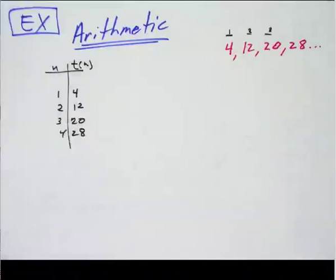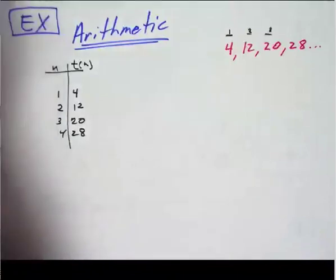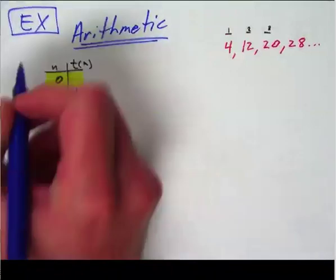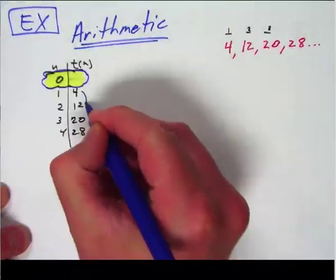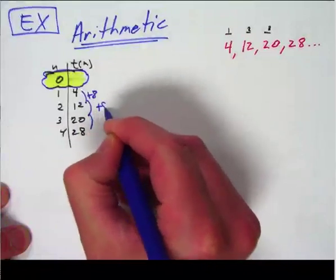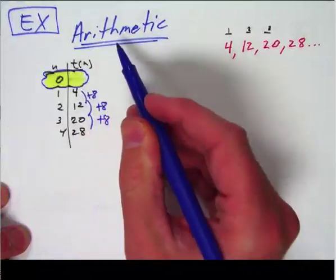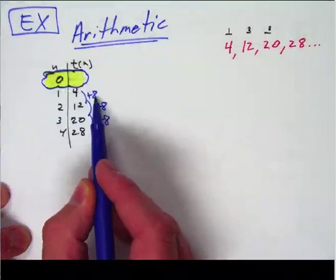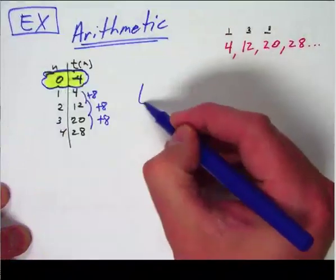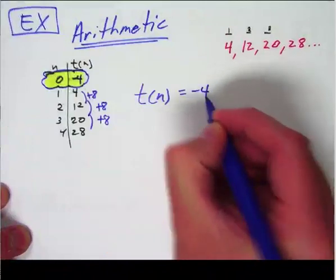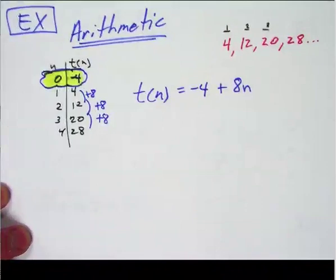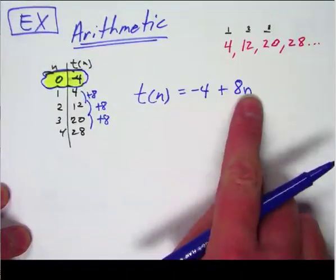What I'm looking for is the pattern. The two key ingredients to writing an equation are: what it starts at — better known as its initial value — and what it goes by. So I need to figure out the starting value, which is where the 0 term would be. I can clearly see that this is adding 8 each time. Since it's arithmetic, if term 1 is 4, going backwards 8 puts me at negative 4. So the sequence would be t(n) equals negative 4, and then I add 8 every time, giving me t(n) = -4 + 8n.